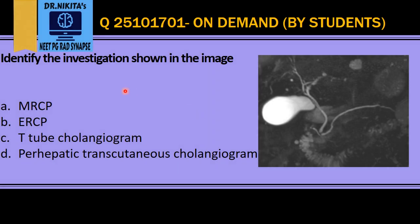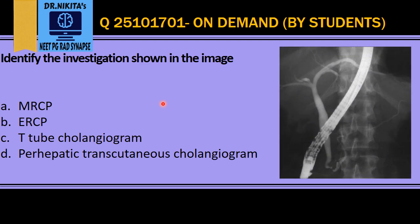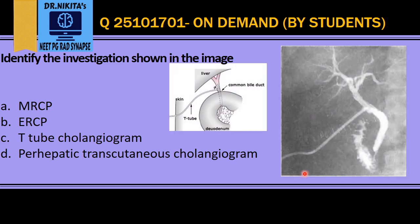In this question we have been asked to identify the investigation, so let us see all the investigations given in the options. This investigation is an ERCP. Why is it an ERCP? Because ERCP stands for Endoscopic — do you see an endoscope here which is going from the esophagus, stomach, into the duodenum? The presence of the endoscope tells you that it is an ERCP, so you would see an endoscope like this in ERCP.